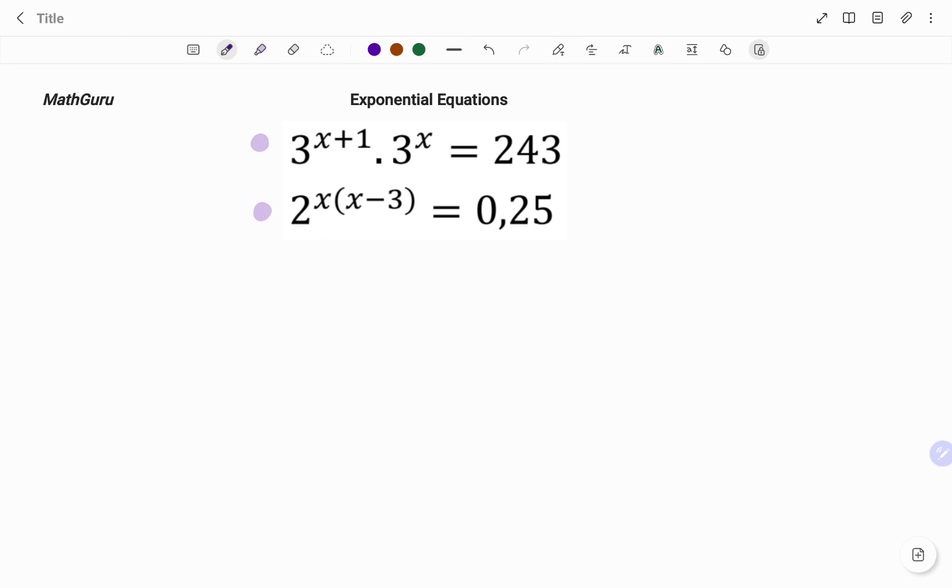In the first example, we have 3 to the power of x plus 1 multiplying 3 to the power of x equals 243.